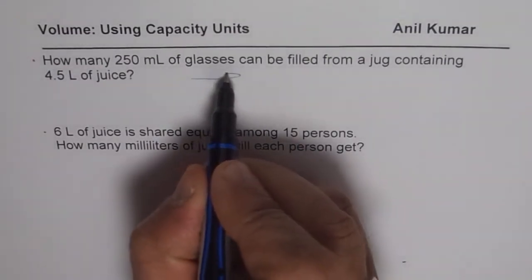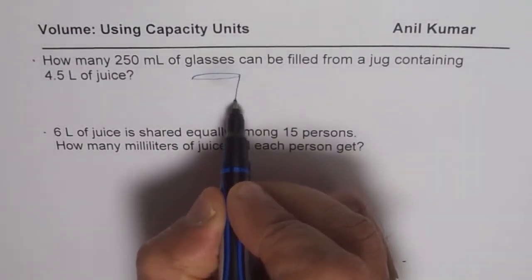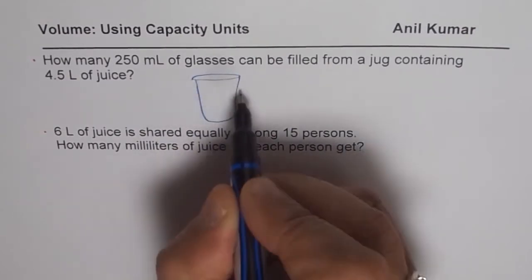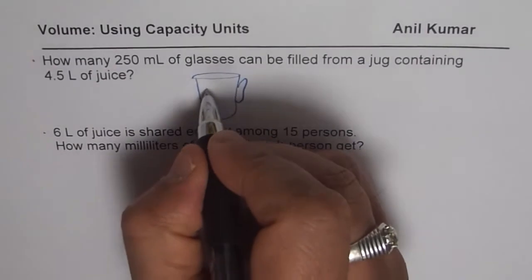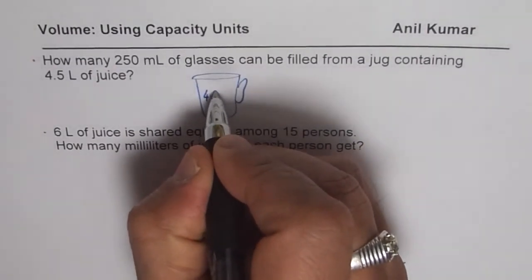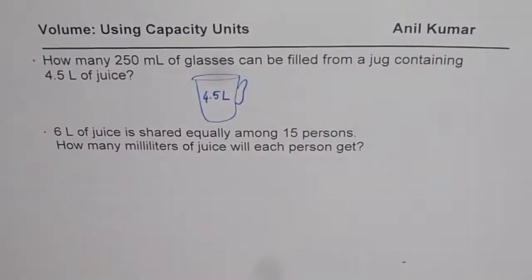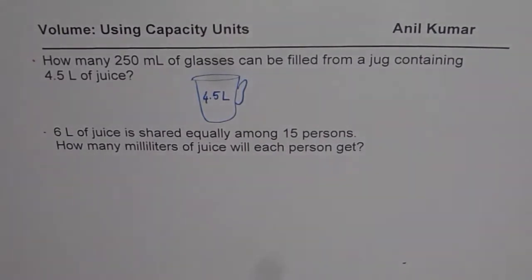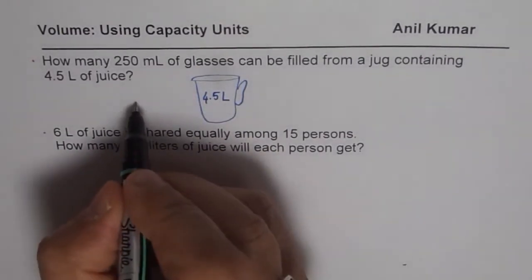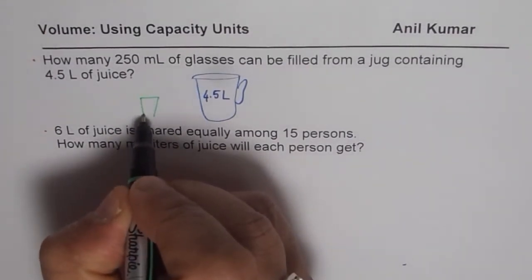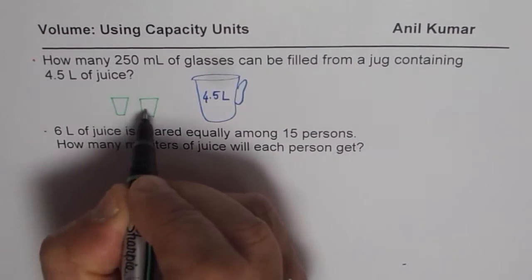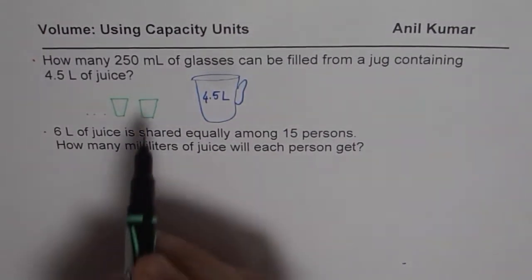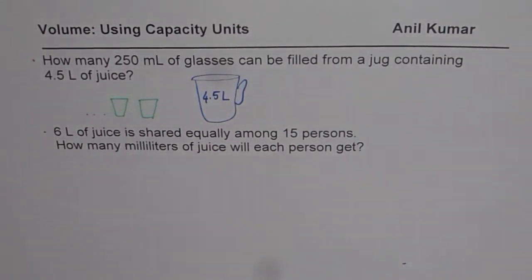So think like this, that we have a big jug right here. So let's say that's a jug for us. And the capacity of this jug is 4.5 liters. And we want to fill in a few glasses, which are 250 milliliters each. So we have to fill in some glasses like this. And each glass here is 250 milliliters. Now, the question is, how many such glasses can be filled? So that is how you have to understand the question.